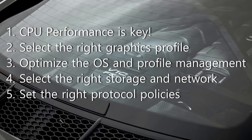When dealing with graphical workloads, it is not better to have more cores — it is better to have more single-thread performance. So the speed at which the CPUs are running is more important. Instead of having a 2 GHz 24-core CPU, you can better opt for a 3.5 GHz 12-core CPU. It does mean that you get fewer VMs on that one box, but the performance is great.